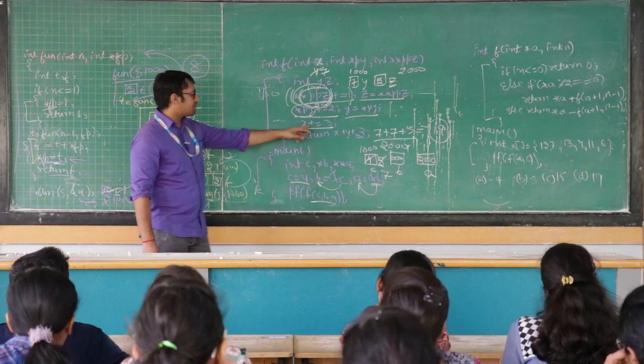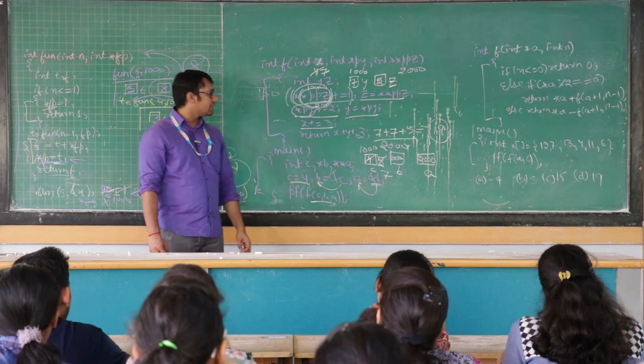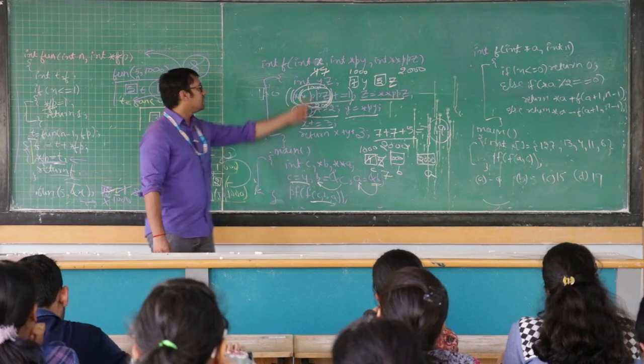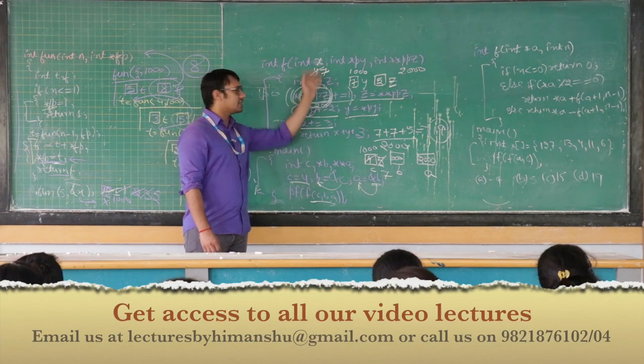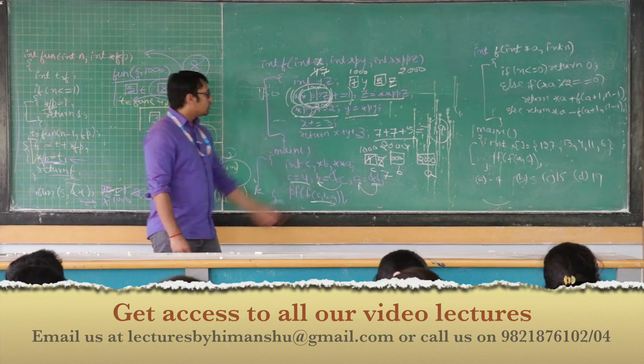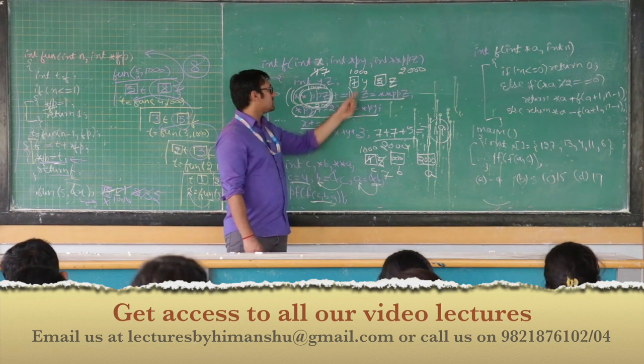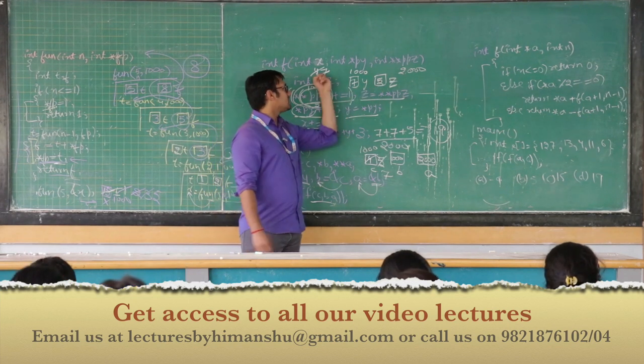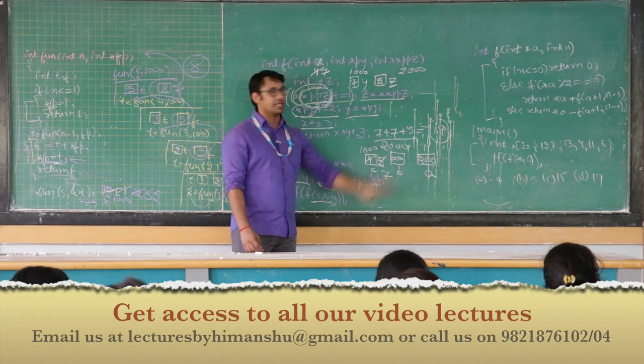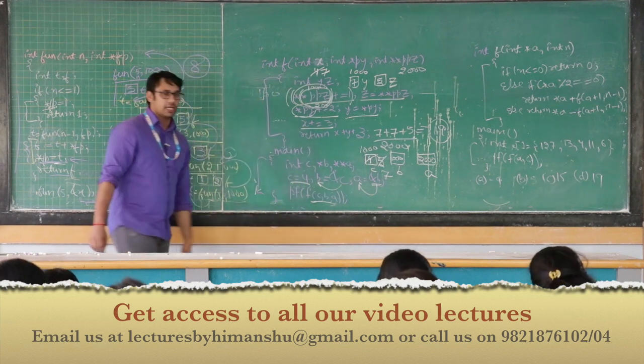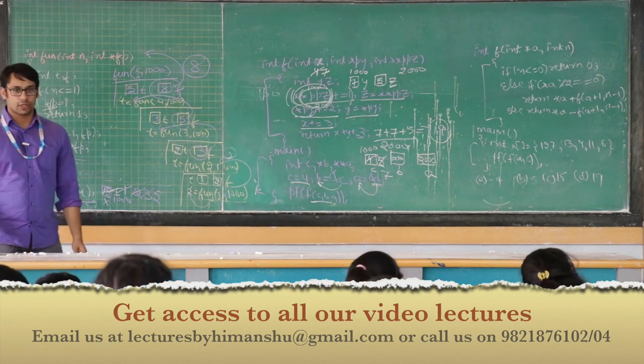Now x plus equal to 3. So we are incrementing the value of x by 3. Value of x was 4, 4 plus 3 is 7. So x plus y plus z is 7 plus y 7 plus z 5, 7 plus 7 plus 5 which is equal to 19. So it is going to return 19, and this printf statement is going to print 19.